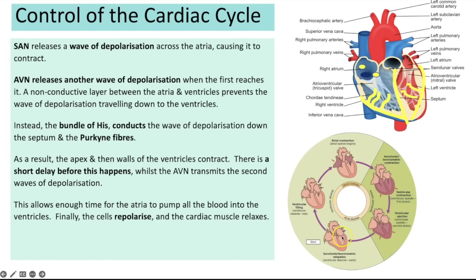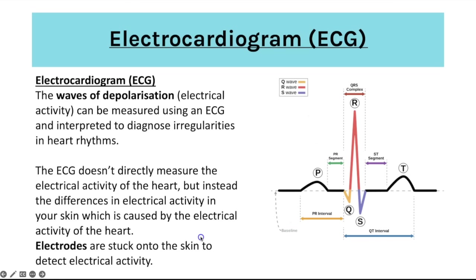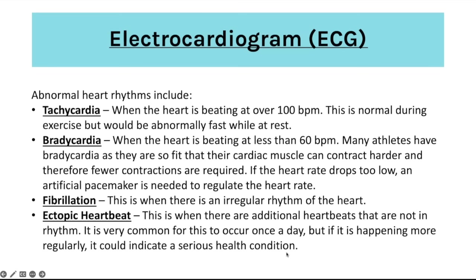The final step is diastole when repolarisation occurs and cardiac muscle relaxes. An electrocardiogram (ECG) measures these waves of depolarisation and can be interpreted to diagnose irregularities in heart rhythms. The ECG detects differences in electrical activity in the skin caused by the heart's electrical activity via electrodes stuck onto the skin. Key abnormal heart rhythms include: tachycardia — heart beating over 100 bpm at rest; bradycardia — heart beating at less than 60 bpm.